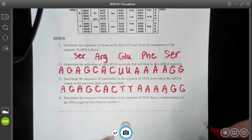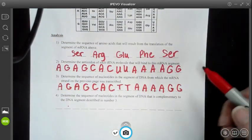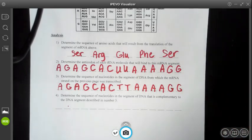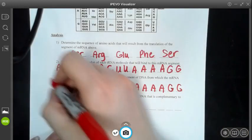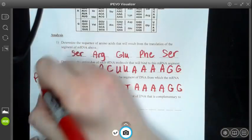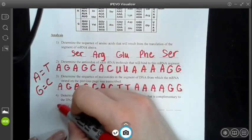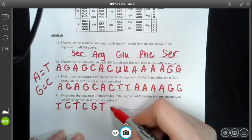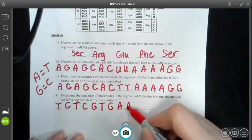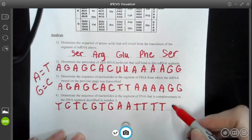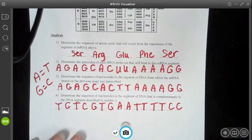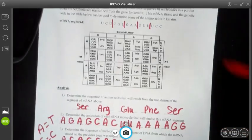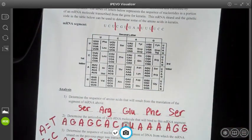Now the very last problem says determine the sequence of nucleotides in a segment of DNA that's complementary to the DNA from number three. So I'm going to do my complementary base pairs. Remember, A goes with T, G goes with C. So A to T, C, T, C, G, T, G, A, A, T, T, T, T, C, C. And that is how you code for DNA, mRNA, and how you use the genetic code to determine your amino acids.